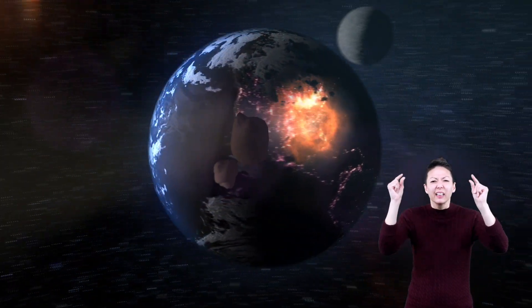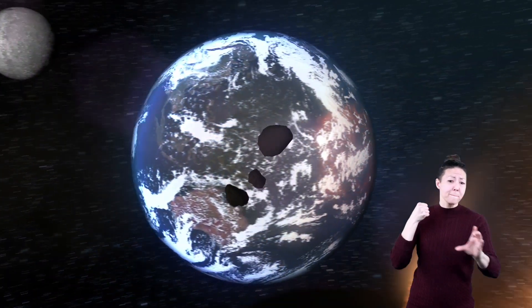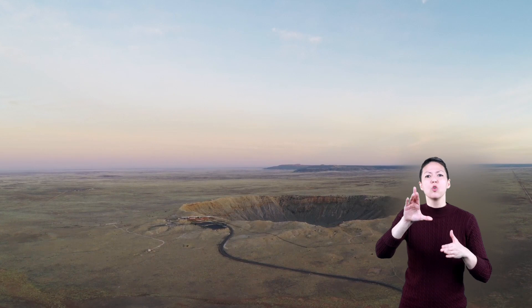Atmosphere is like a see-through shield that protects planets from space rocks and other debris. So, if there isn't much atmosphere, those rocks can end up hitting the planet, creating giant holes or craters.